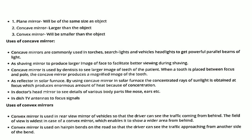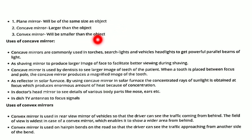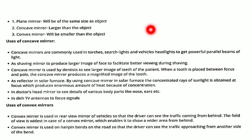To summarize: convex mirror is used in vehicles' rear-view mirrors and at hairpin bends on the road. For the plane mirror, the image formed is the same size as the object. For the concave mirror, the image formed is larger than the object. For the convex mirror, the image formed is smaller than the object. These are the key image formation properties of the three types of mirrors.